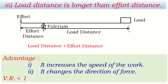Looking at all three conditions, we can say that the first class lever can give us all three advantages of a simple machine: magnification of effort, increase of speed of work, and change of direction of force. Other simple machines cannot give all three advantages. We'll meet in the next class.